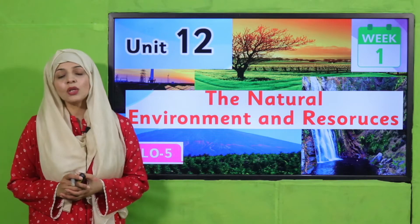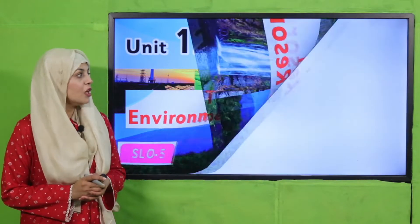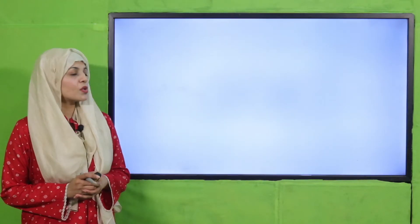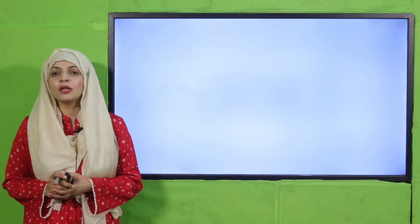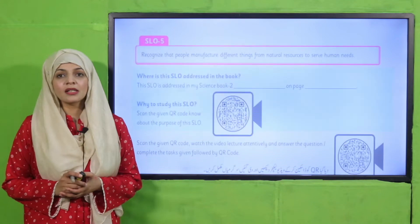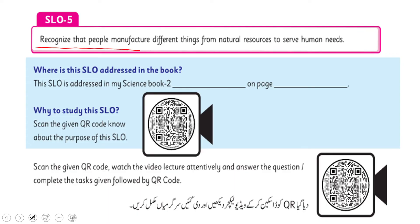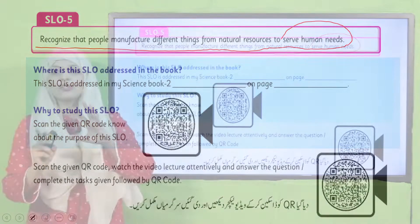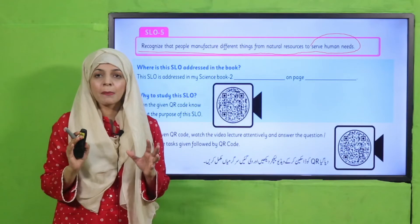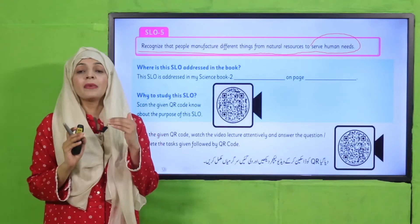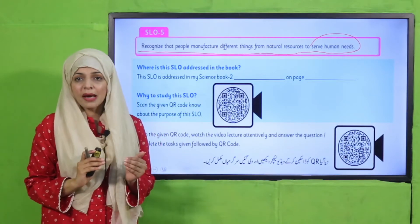The SLO under discussion is SLO Number 5. According to this SLO, the students will be able to recognize that people manufacture different things from natural resources to serve human needs. So because we are learning about natural resources and the natural environment, it is very important for children to understand this.